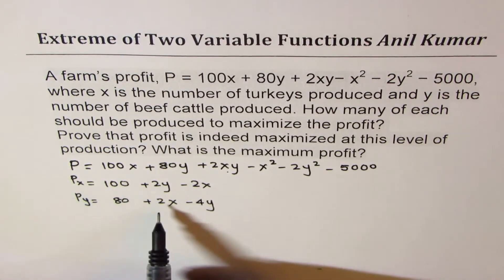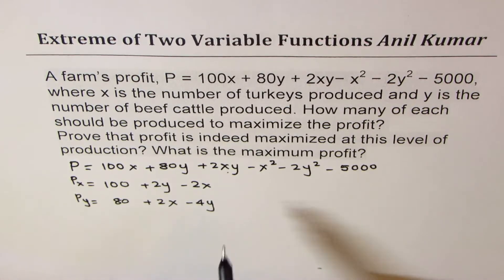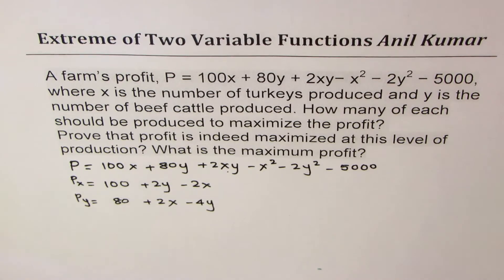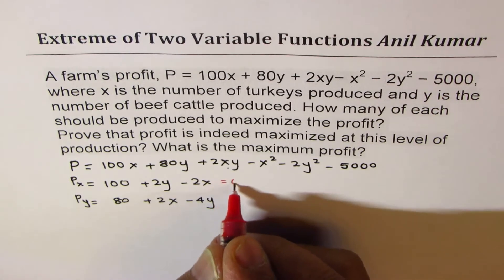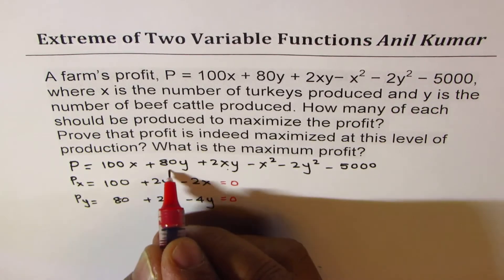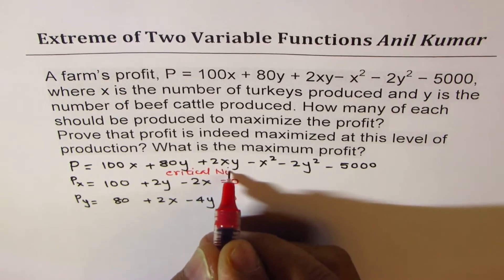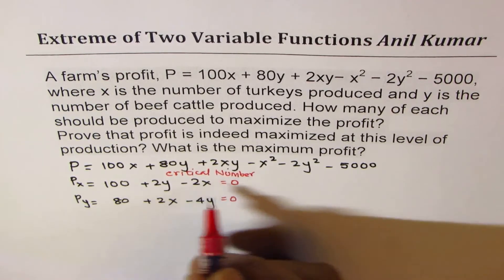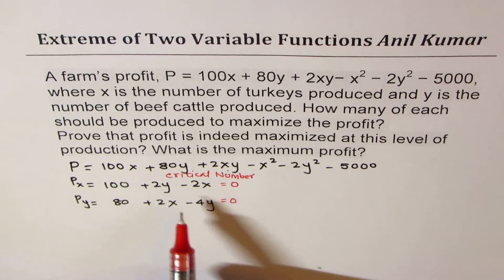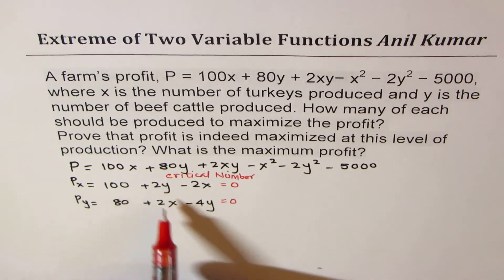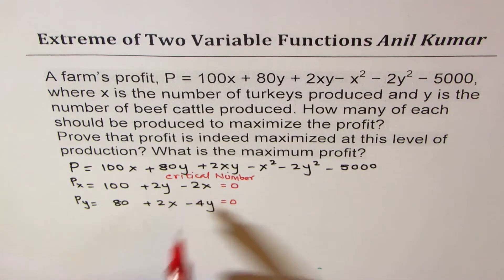Now to find the critical numbers, we have to equate them to 0 and simplify — just as you do in single variable calculus. So we will equate these two equations to 0 to find the critical number. From here you can simplify these two equations simultaneously and solve for x and y.